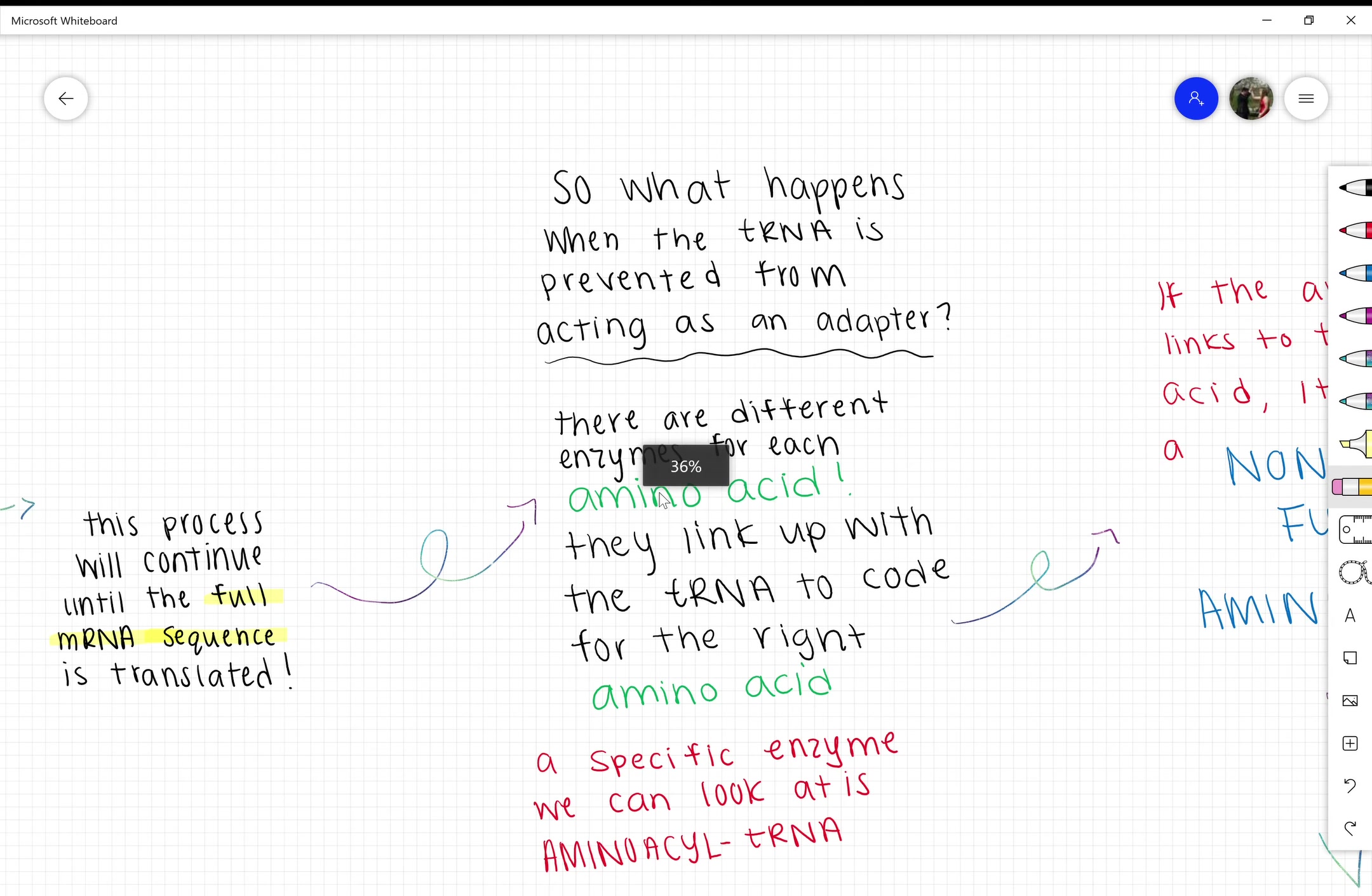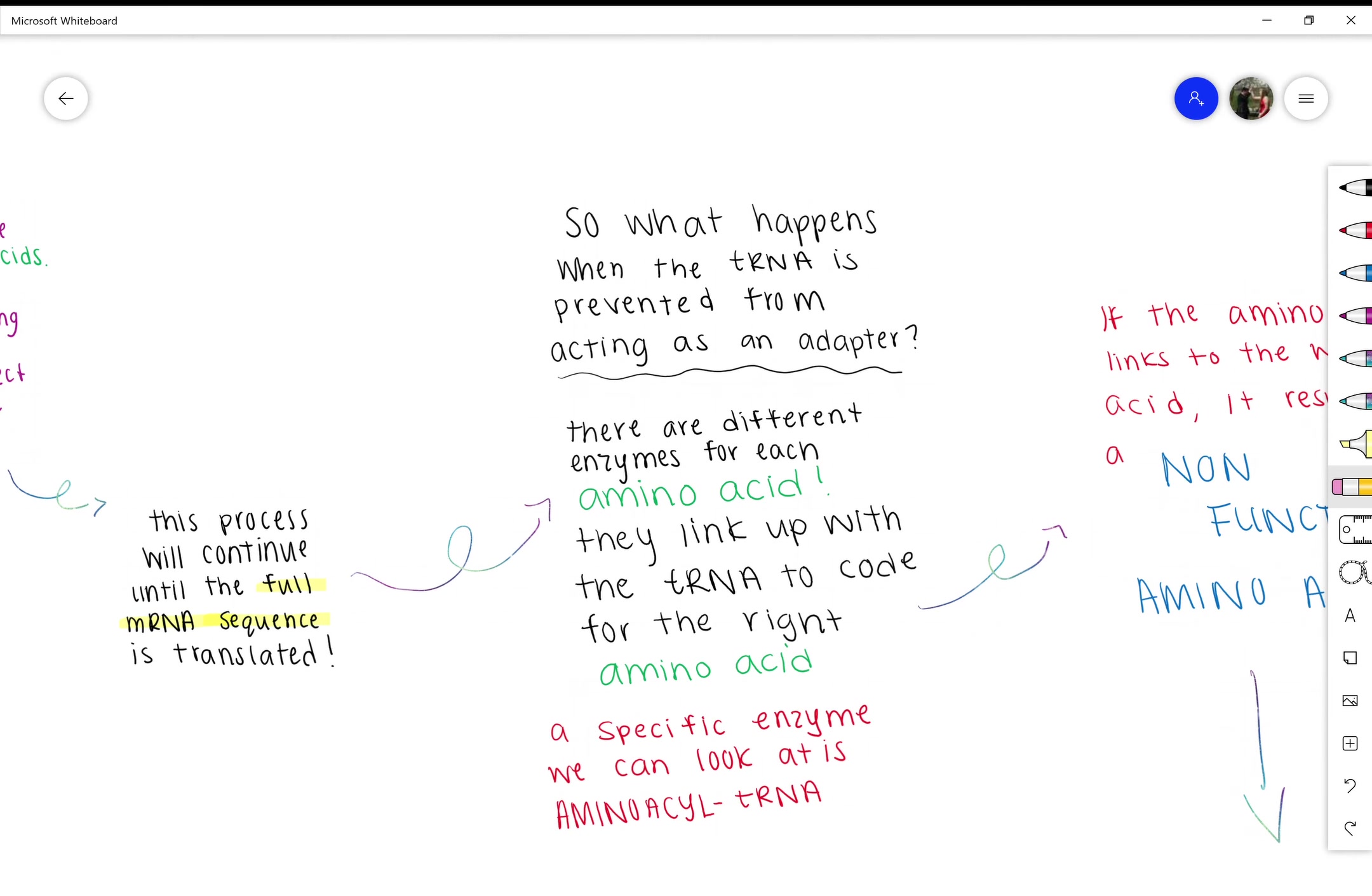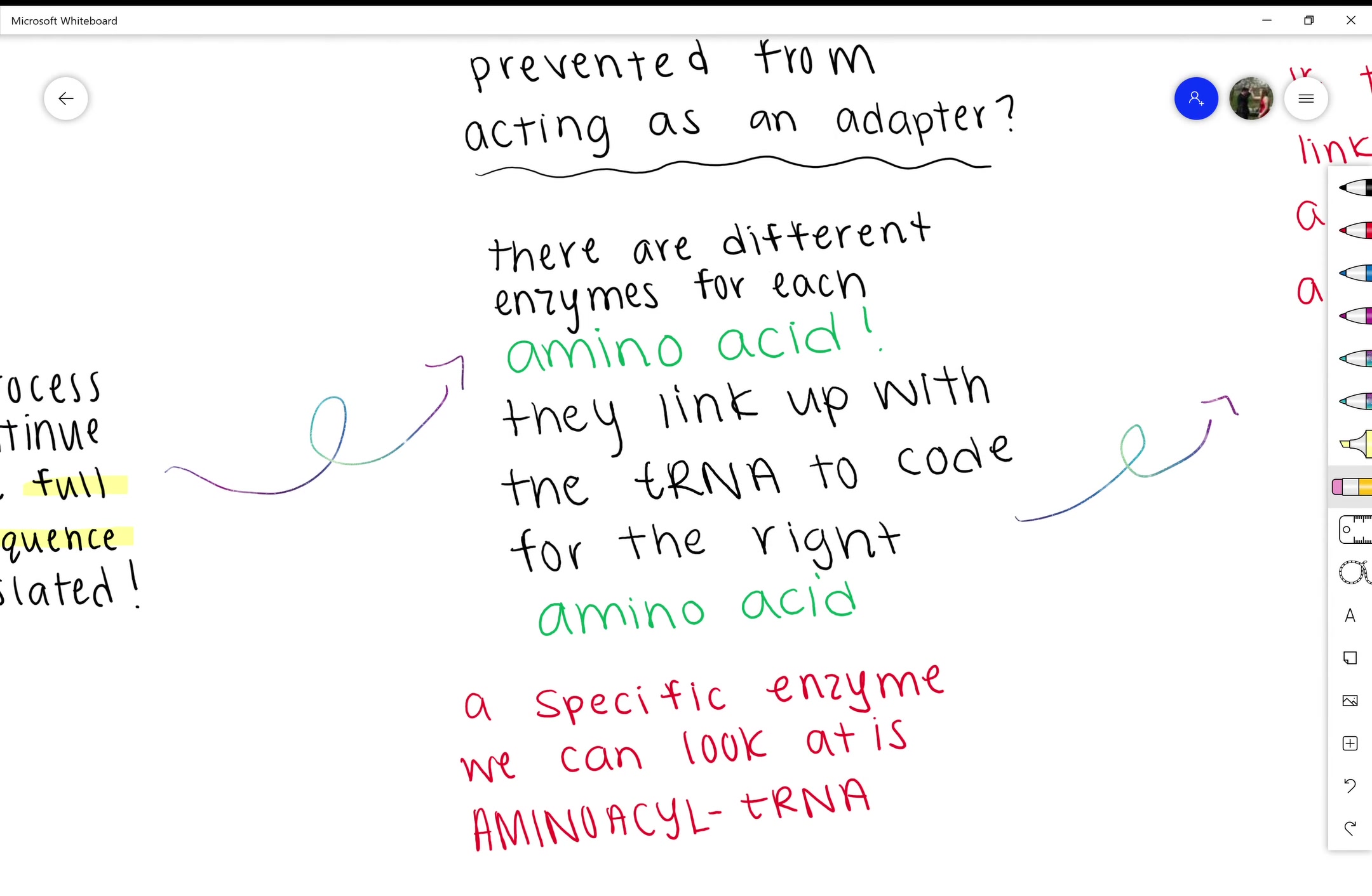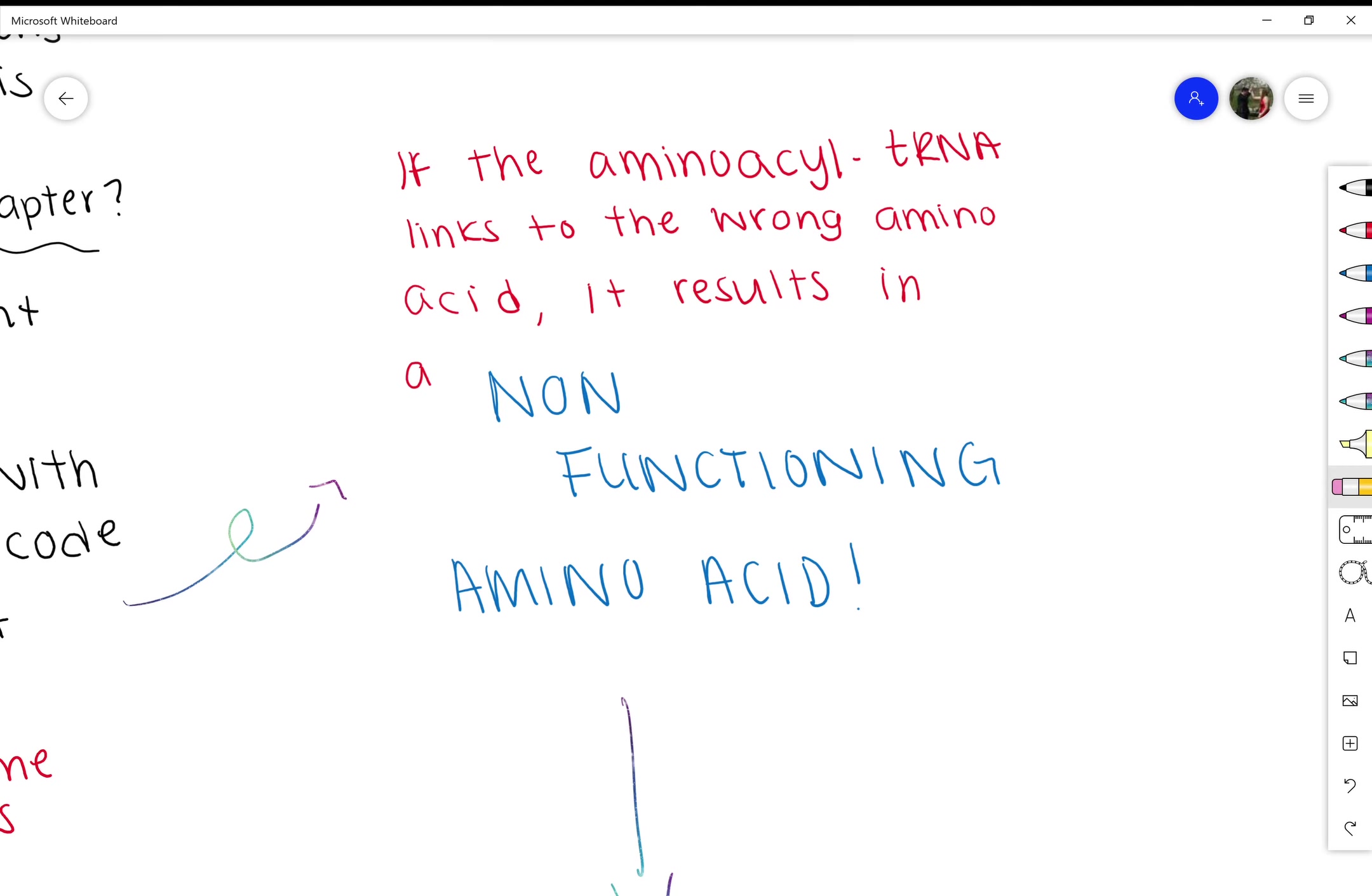What happens when the tRNA is prevented from acting as an adapter? There are different enzymes for each amino acid; they link up with the tRNA to code for the right amino acid sequence. A specific enzyme we're looking at is aminoacyl-tRNA. If aminoacyl-tRNA links to the wrong amino acid, it can result in a mutation. The mutation could be a silent mutation, meaning nothing's changed, but most of the time it'll code for a non-functioning amino acid.